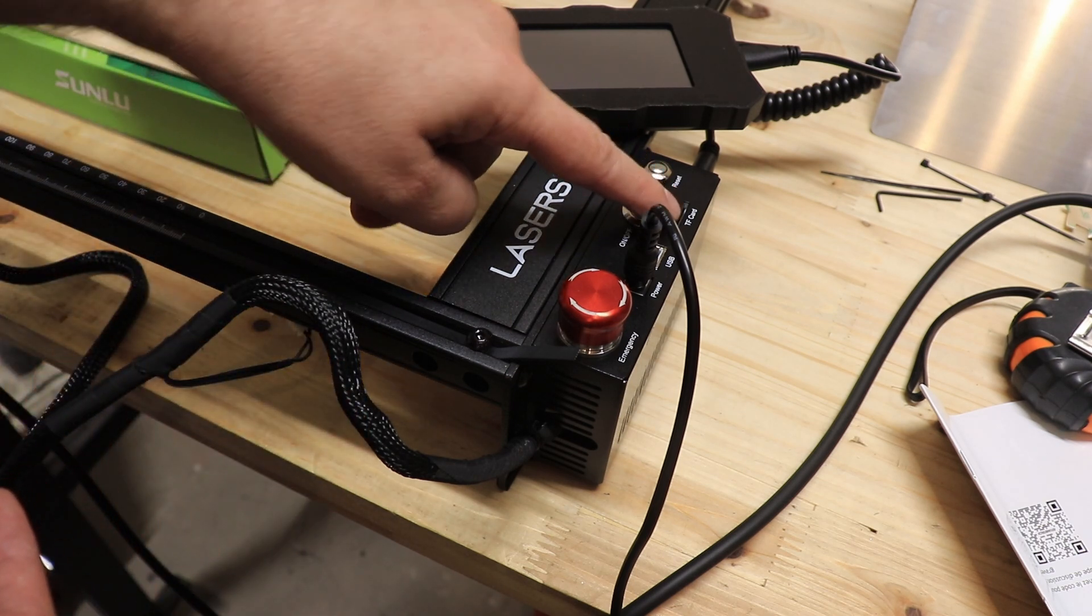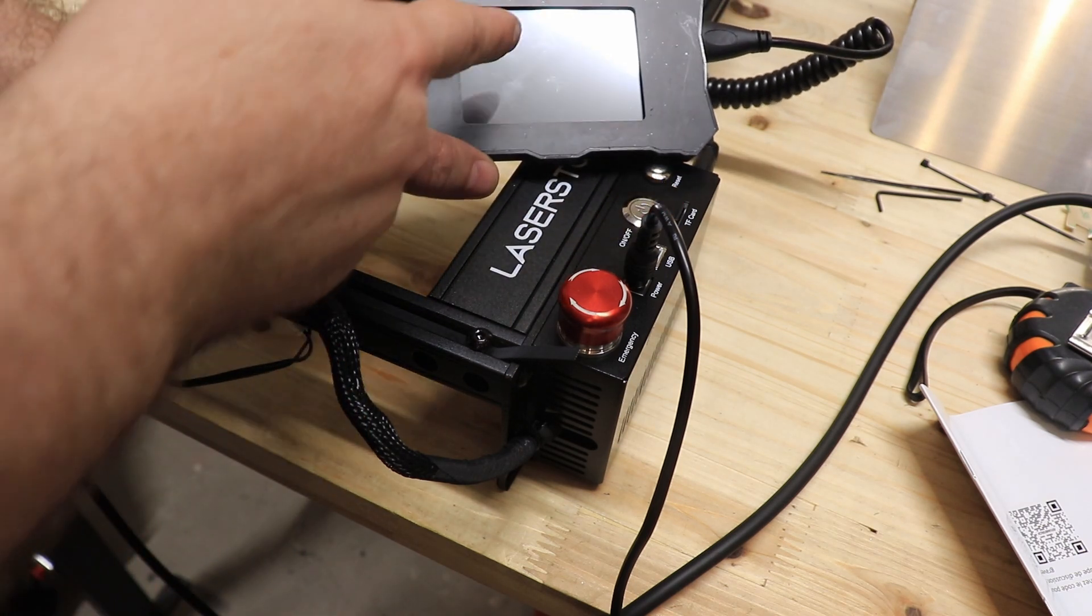I will start with the engraving in offline mode. I prepared and copied the NC code to this TF card. And I will just run the code from this screen.